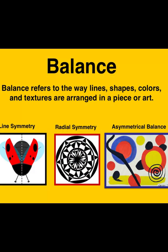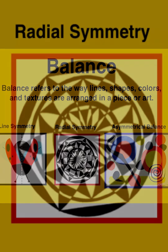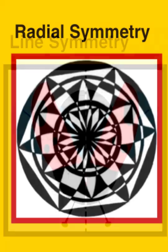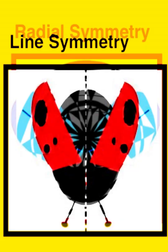Balance has to do with the way you arrange your picture plane — the way you arrange lines, shapes, and color. If the arrangement is made evenly around the picture, you have a radial balance.